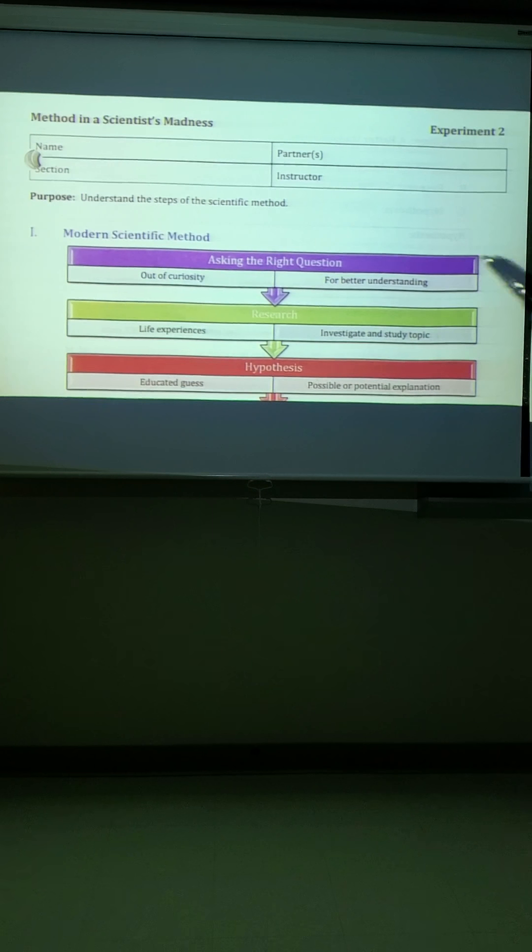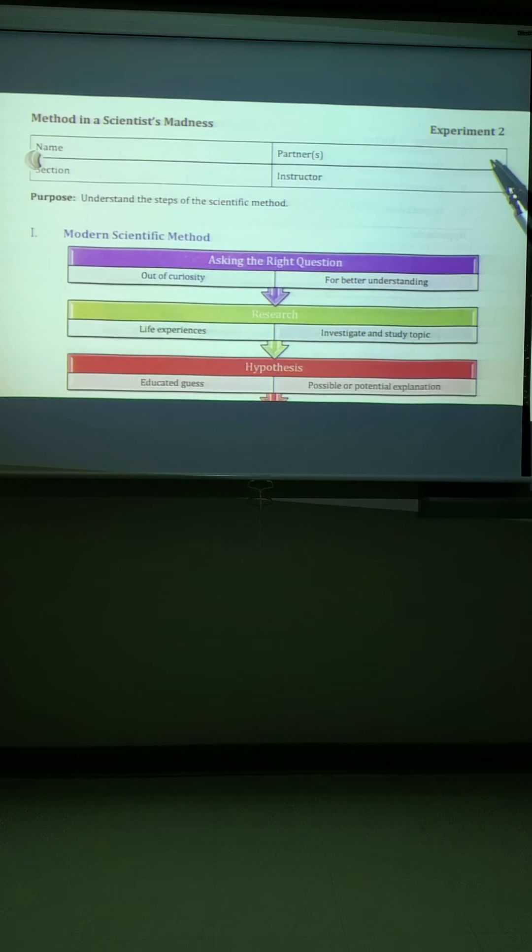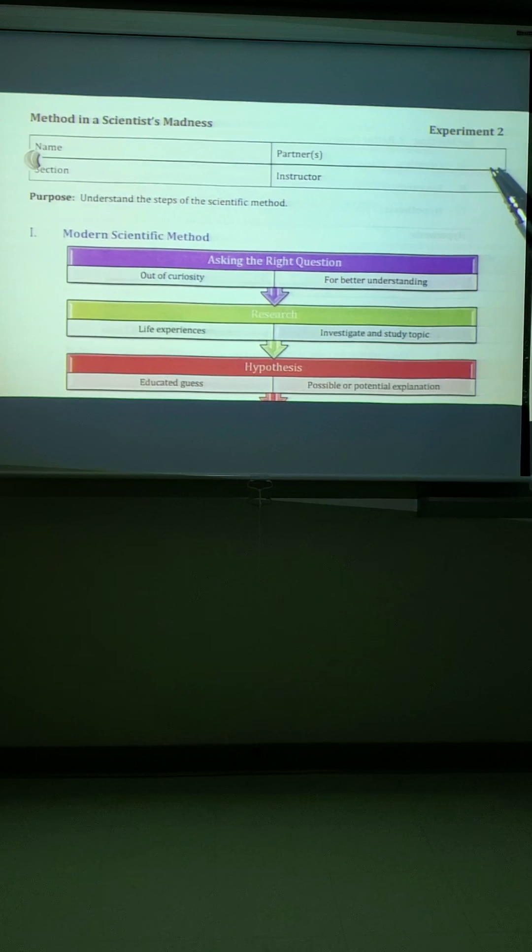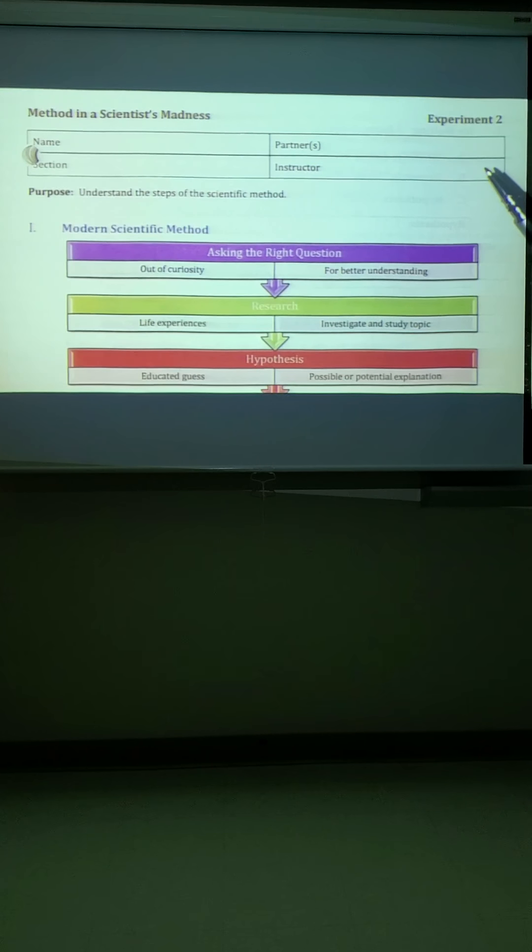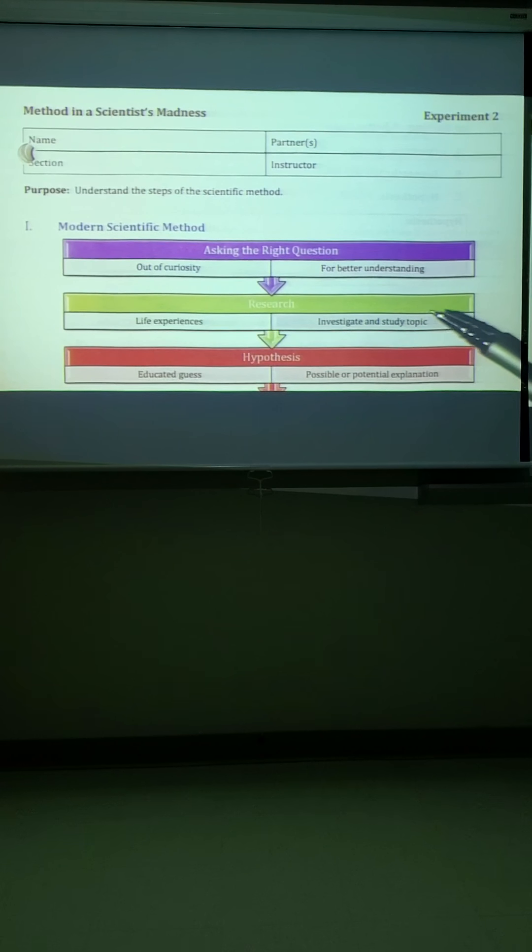Hey guys, this is Dr. Calkins. We're going to cover experiment two, a method in a scientist's madness. The scientist we're really worried about was Robert Boyle back in the 1600s. He's the one that gave us this whole idea of scientific method.